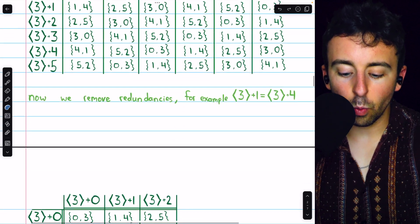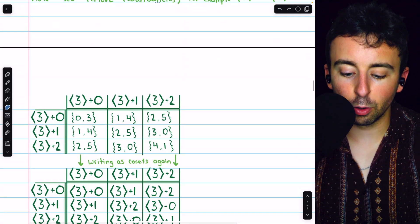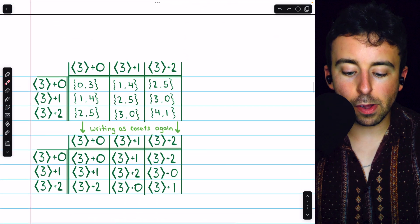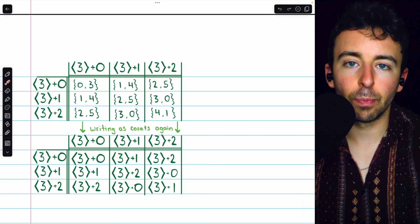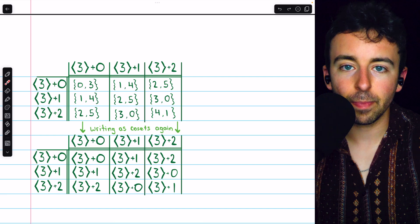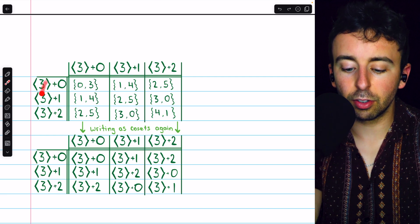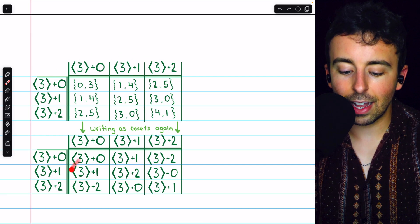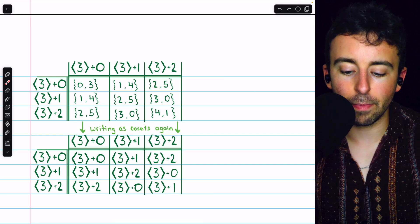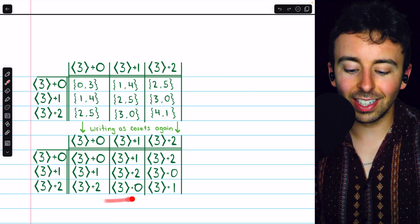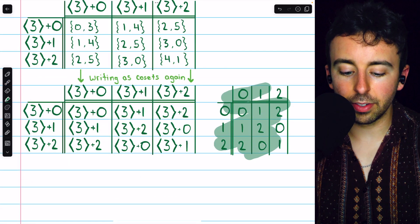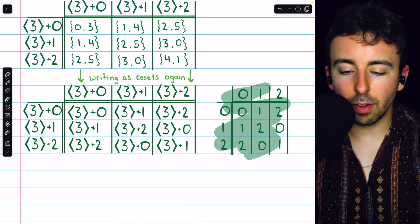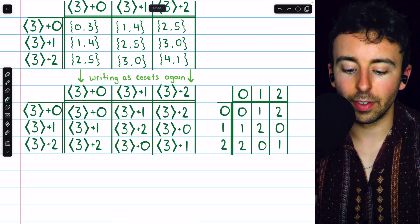All right, so removing redundancies, we get this much nicer group table which we can then put back into its coset form just because that's going to help us see the isomorphism. This is the 3x3 table excluding all of the redundancies and that's with all of those cosets written back in. And at this point, it's clear to see how this will be isomorphic to Z3. There is our group table for Z3 and the isomorphism between these things is pretty obvious.